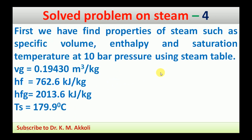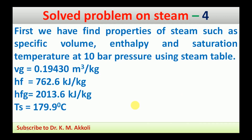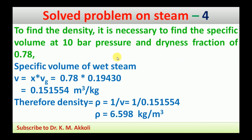To find these values, we use the steam table. We find the properties of steam — specific volume, enthalpy, and saturation temperature — at 10 bar pressure using the pressure-based steam table. From the steam table at 10 bar: saturation temperature is 179.9°C, specific volume of dry steam Vg = 0.19430 m³/kg, sensible heat hf = 762.6 kJ/kg, latent heat hfg = 2013.6 kJ/kg.